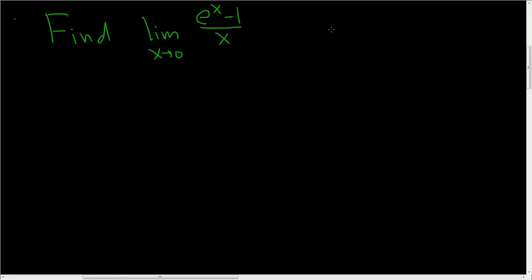So in this case, if you plug in 0, you get e to the 0 minus 1 over 0. So you get, that's 1, so 1 minus 1 over 0. So you get 0 over 0.